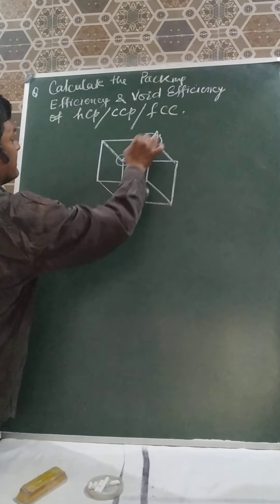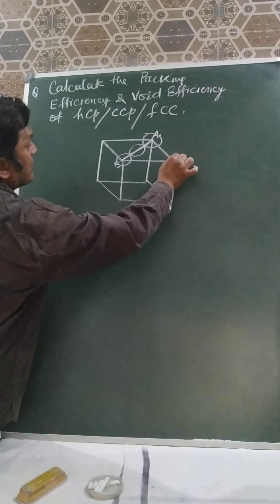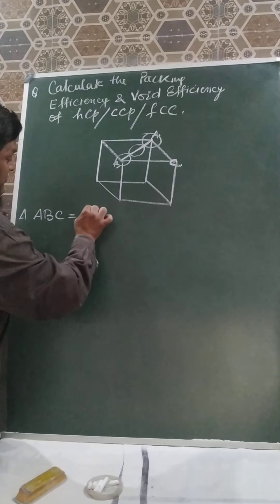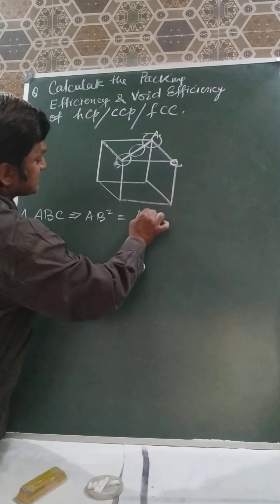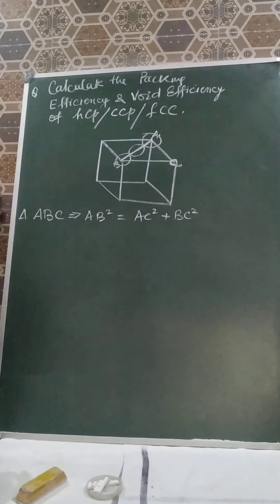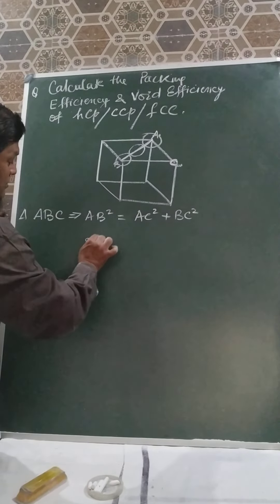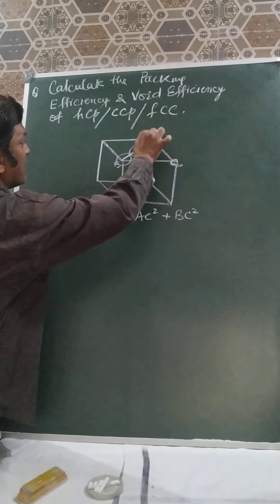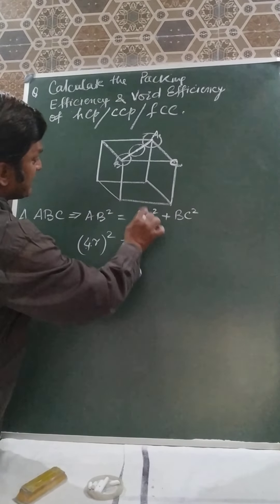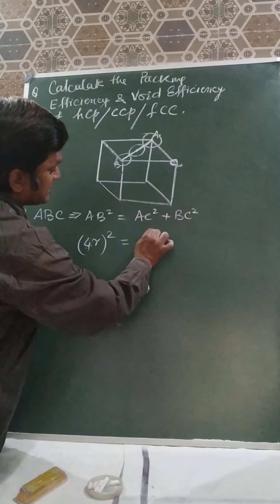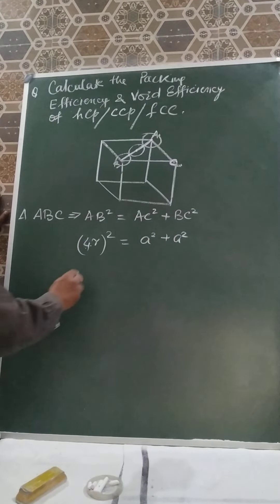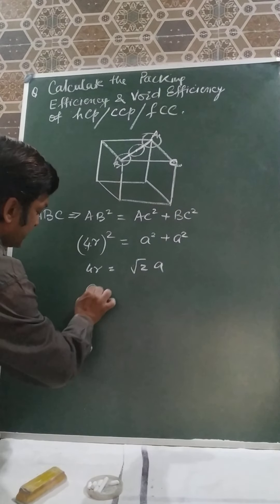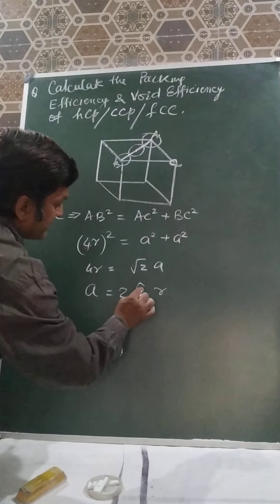In triangle ABC, AB square is equal to AC square plus BC square. AB is equal to 4R (that is 2R plus 2R), and BC is equal to A's length, and AC is also equal to A's length. So we get: A square plus A square equals 4R squared, therefore 4R equals root 2 times A, giving us A equals 2√2R.